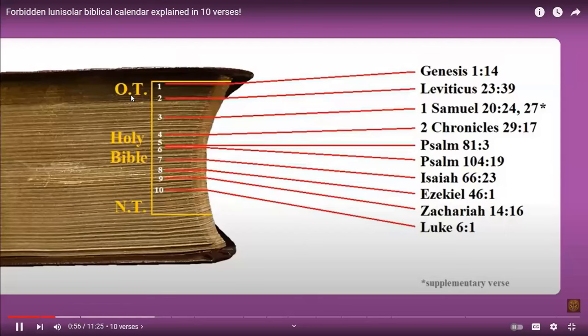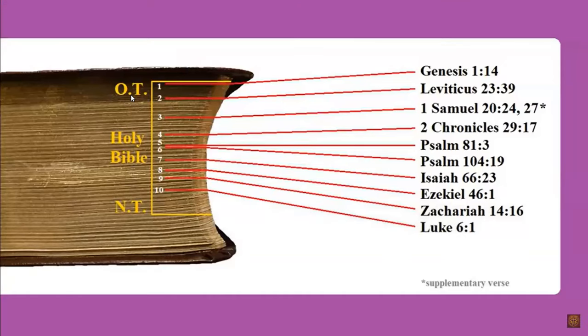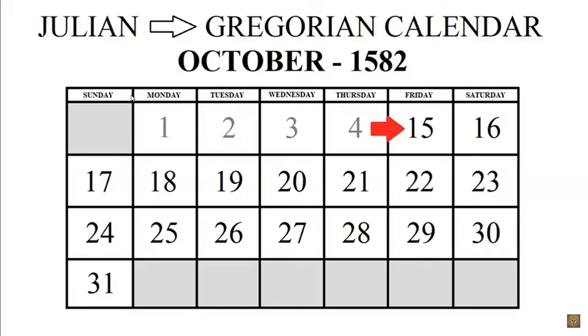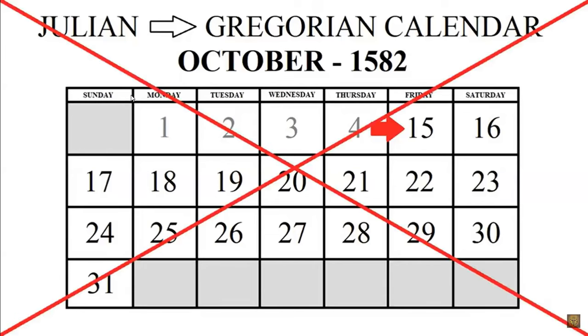These 10 verses that I mentioned come from nine different books of the Bible so that you can see that this calendar is consistent from Genesis to Revelation and it does not change, just like our God. What we cannot say about our man-made pagan, unbiblical calendar that has been manipulated multiple times. Let me analyze our 10 verses, starting with the easiest and leaving the difficult ones for the end.